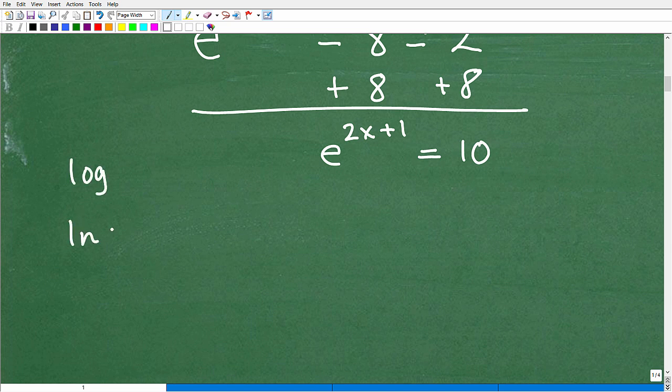So instead of doing log of both sides, again, the logarithm version, you have two choices, log or ln. Anytime you see e, you're going to be doing the ln version. So we're going to take the ln of both sides, it's going to look like this, ln of e to the 2x plus 1 is equal to ln of 10.